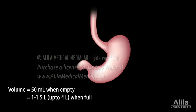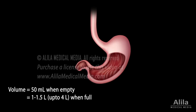The stomach is basically an expandable muscular sac. When empty, its inner surface has a wrinkled appearance with multiple folds called rugae. These folds flatten when the stomach is full.